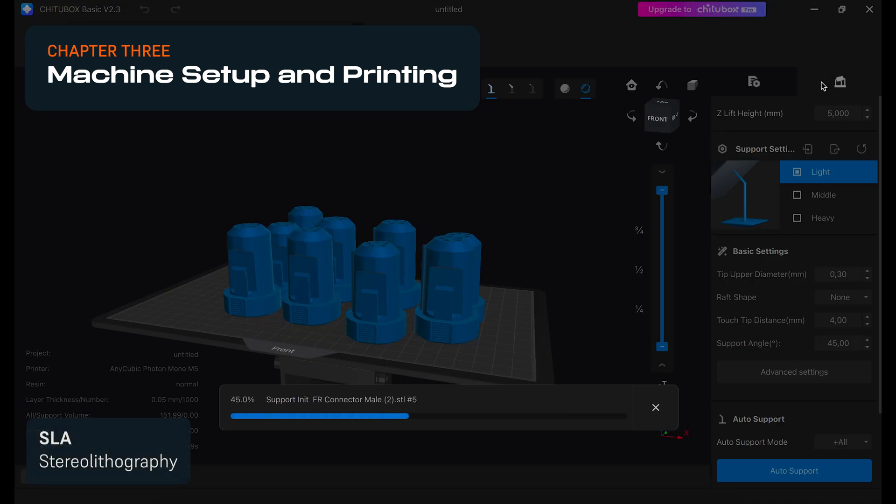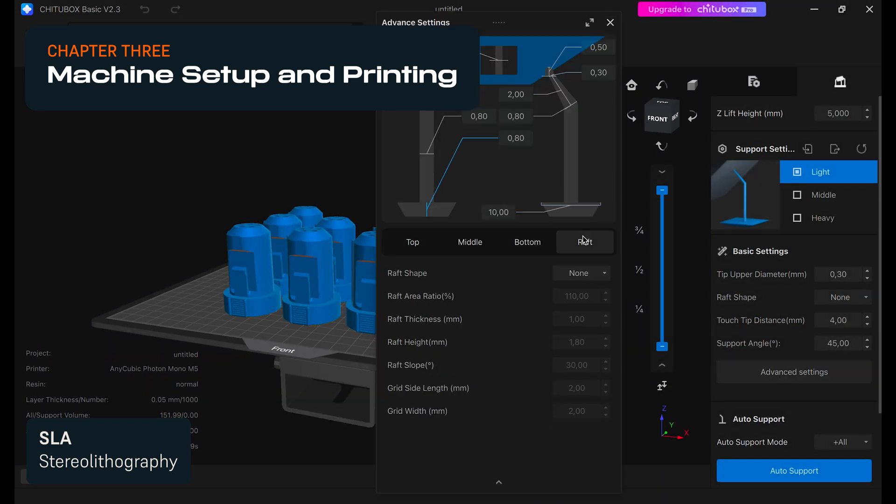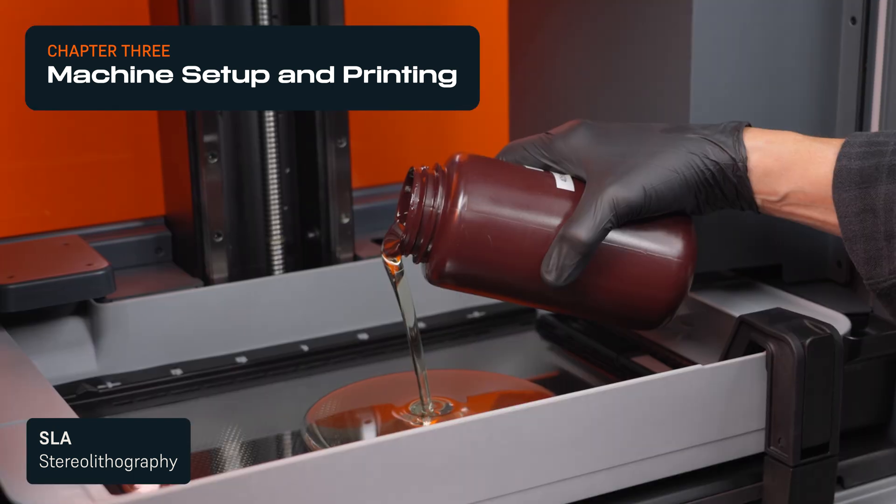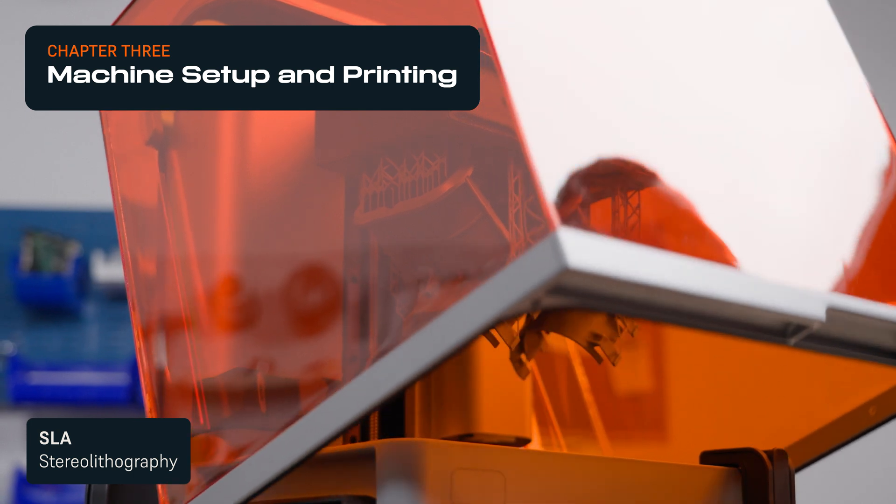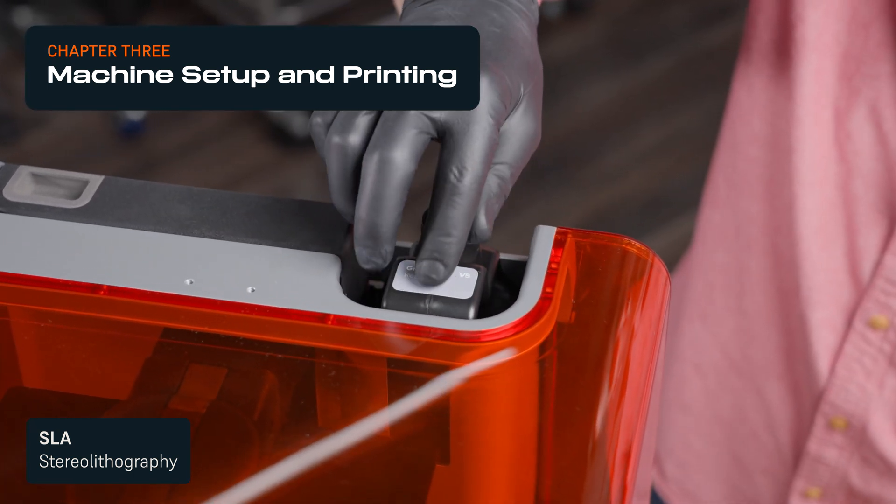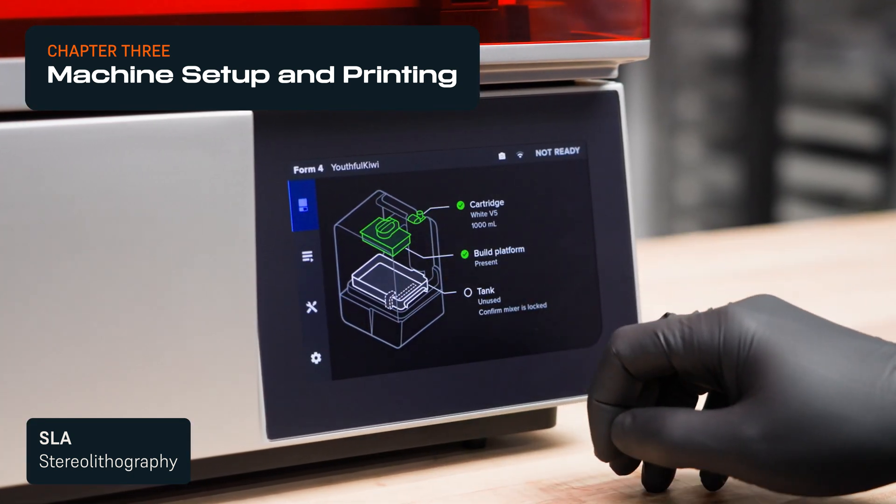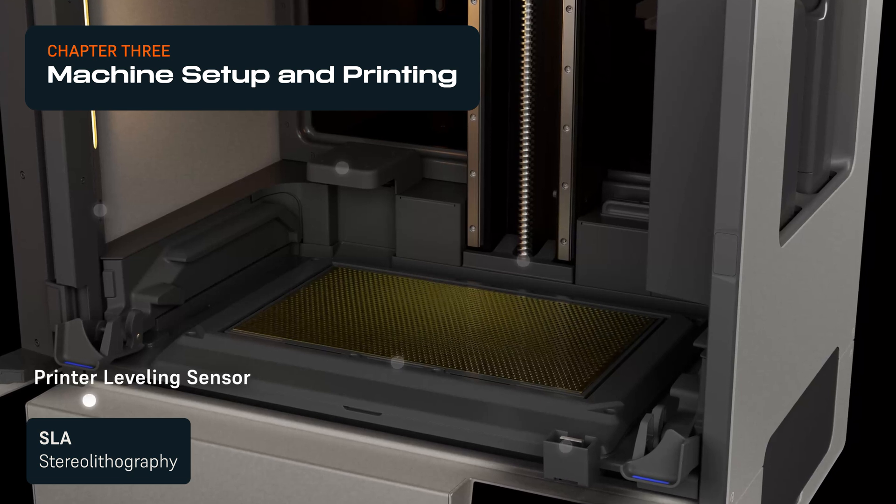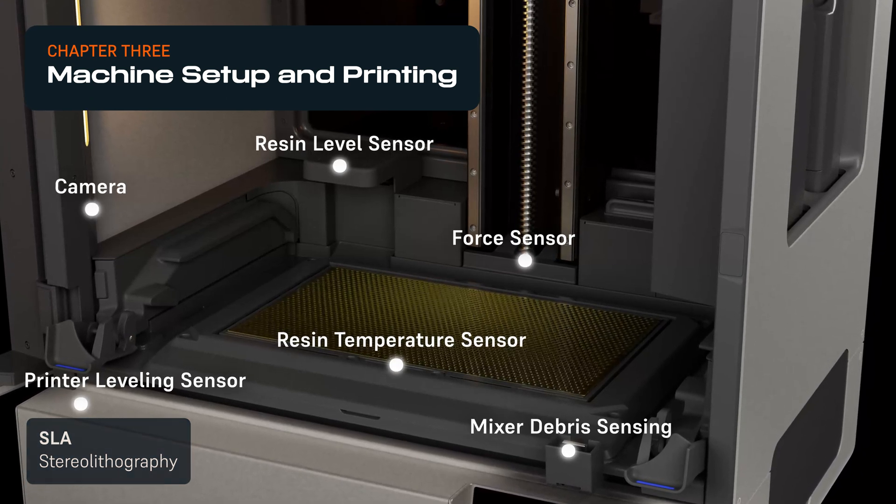With SLA 3D printers, lower-cost models require calibration and some experimentation with print settings for each material. During printing, you might need to refill the resin tank as well. Advanced SLA printers like the Form 4 series have automated resin dispensing, so there's no need to refill the tank manually. They also come with validated print settings for each material, as well as a number of onboard sensors for smart monitoring during printing to ensure reliable results.